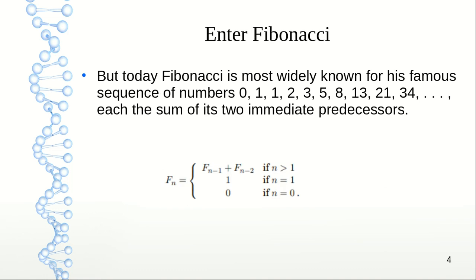Let me introduce you to the area of algorithms through Fibonacci. You must have heard of Fibonacci and the Fibonacci series. Al-Khwarizmi's work couldn't have gained a foothold in the West were it not for the efforts of this man, Fibonacci. But today, Fibonacci is mostly known for his famous sequence of numbers: 0, 1, 1, 2, 3, 5, 8, 13, 21, 34, and so on. Each number is the sum of two immediate predecessors. You can see here fn equals fn minus 1 plus fn minus 2.